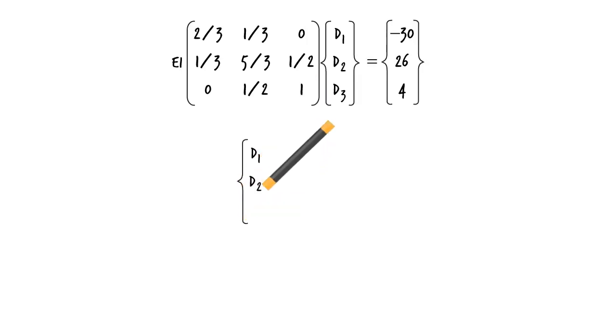Using the Gaussian elimination method, we can solve this linear system of equations. The elements of the unknown vector and the unknown joint rotations become...